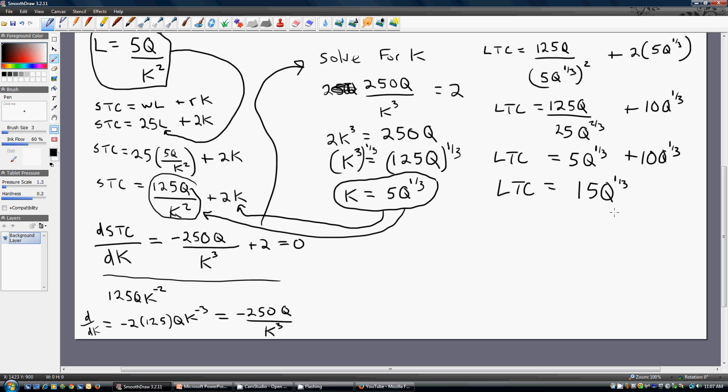You might note, if you were to graph long-run total cost as a function of quantity, this firm would be experiencing economies of scale throughout all output levels. And you can more closely see that by taking the long-run average total cost from taking the long-run total cost and dividing it by Q. You get 15 divided by Q raised to the two-thirds power. So this is where you can see this firm does have economies of scale. As Q gets bigger, long-run average cost falls.